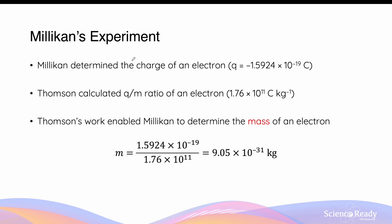Milliken's experiment was therefore able to determine the magnitude of charge of a single electron. The experimental value at the time, when compared to the theoretical value known today, is fairly accurate. Thomson, in his own experiment, calculated the charge to mass ratio of an electron. When combining the results from both Milliken and Thomson's experiments, we can also work out the mass of the electron by dividing the charge by the charge to mass ratio. This gives an approximate mass of 9.05 times 10 to the power of minus 31 kilograms. Again, when this value is compared to the theoretical mass known today, it is also fairly accurate.